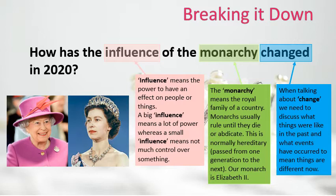The monarchy relates to the royal family of a country. A monarch is the leader and they usually rule until they die or abdicate — abdicate means leave the throne. This is normally hereditary, so you normally become the monarch if your parents were the monarch before you. Our monarch is Elizabeth II and the monarchy is her family.